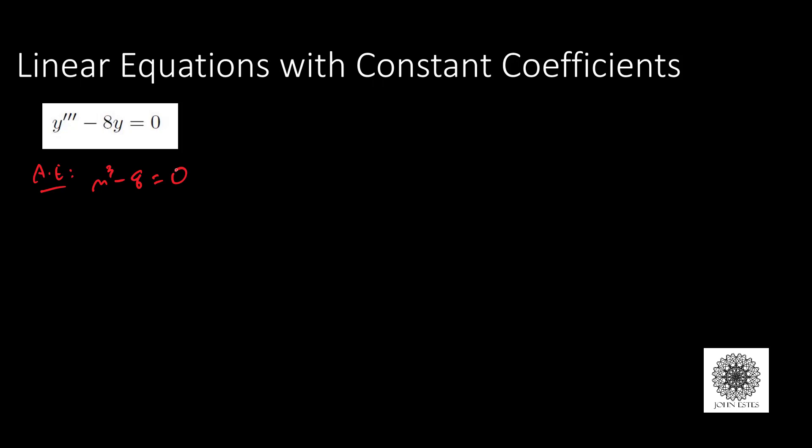You might have to dig back through some algebra to figure this out, but the difference of cubes a cubed minus b cubed factors as a minus b times a squared plus ab plus b squared. In this case, my auxiliary equation is m minus 2 times m squared plus 2m plus 4 equals 0, because 2 cubed is 8.